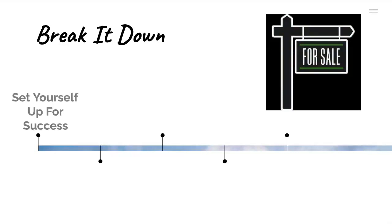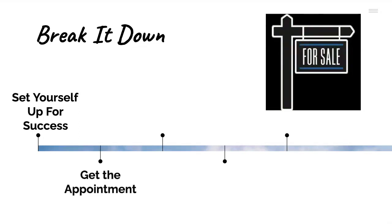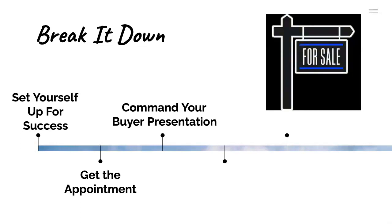So what are we talking about today? Let's break it down. We like to go big picture and then go more and more narrow. We're going to talk about setting yourself up for success, then how to get that appointment, Command your buyer's presentation — that's where we'll dive into Command and actually create it — and then we'll talk about checklists, because if you know me, you know I love the Command checklist, and then we're going to talk about how to win.